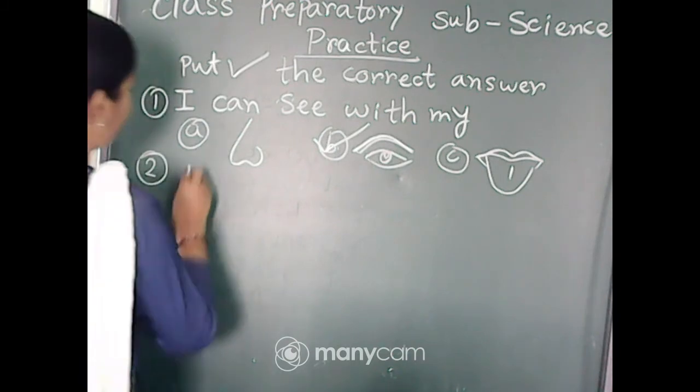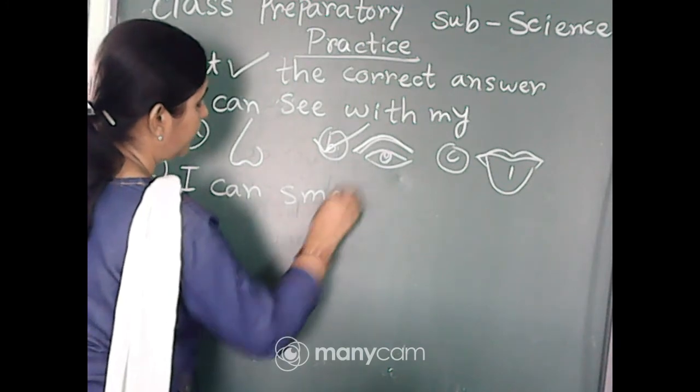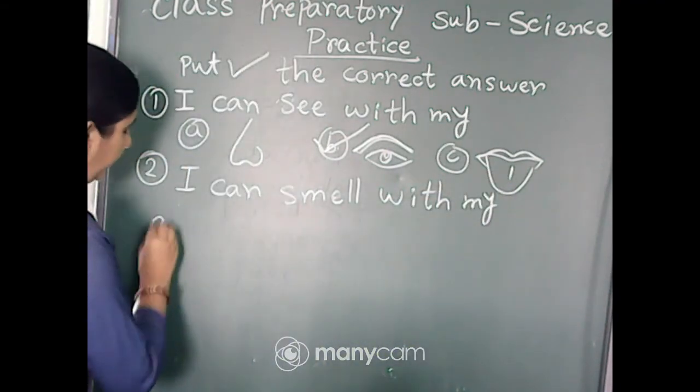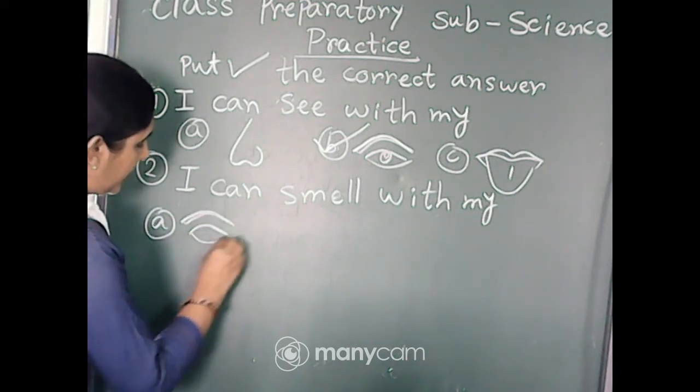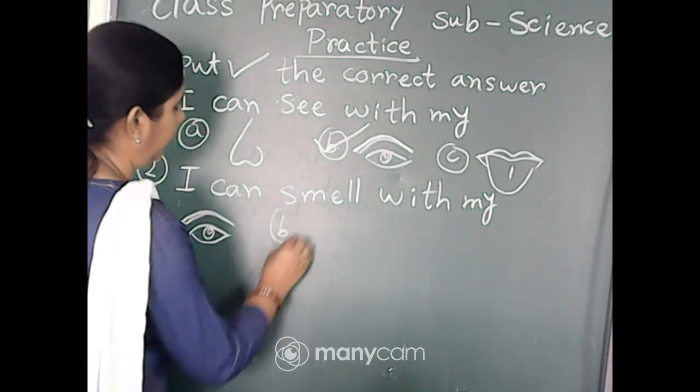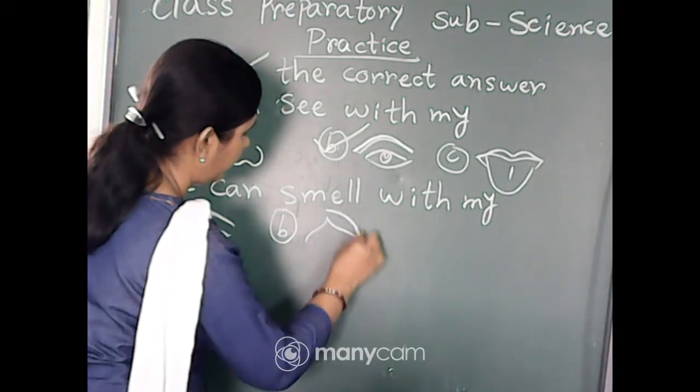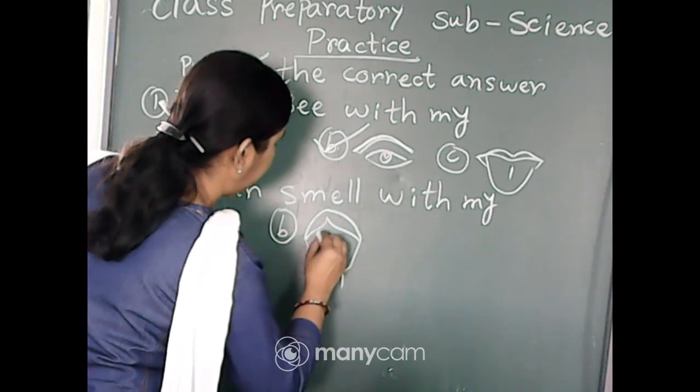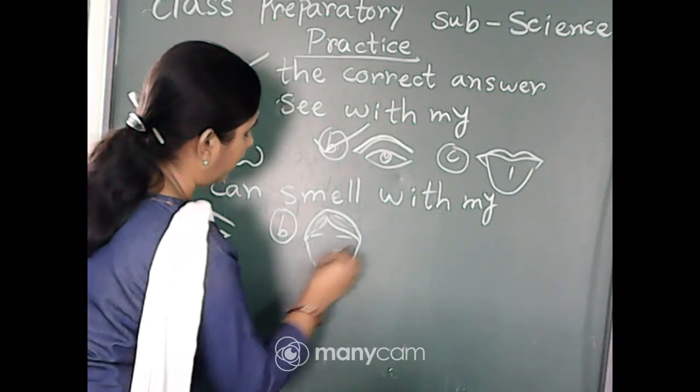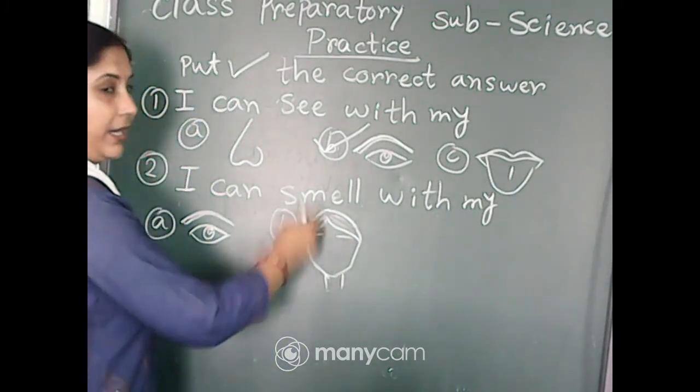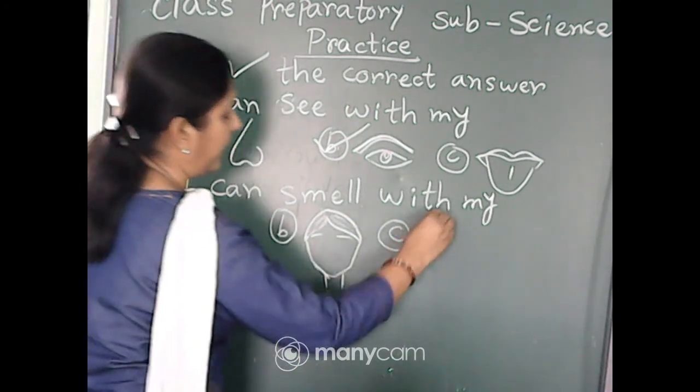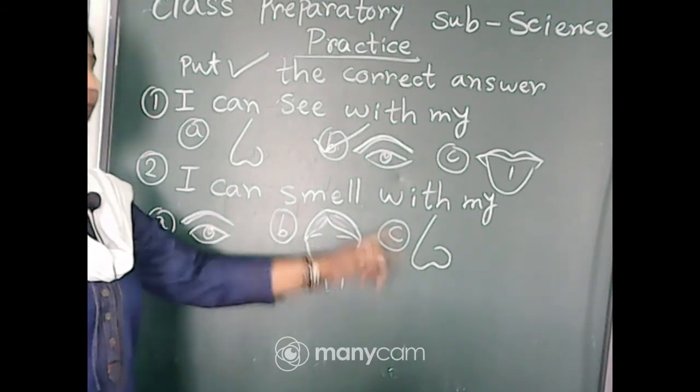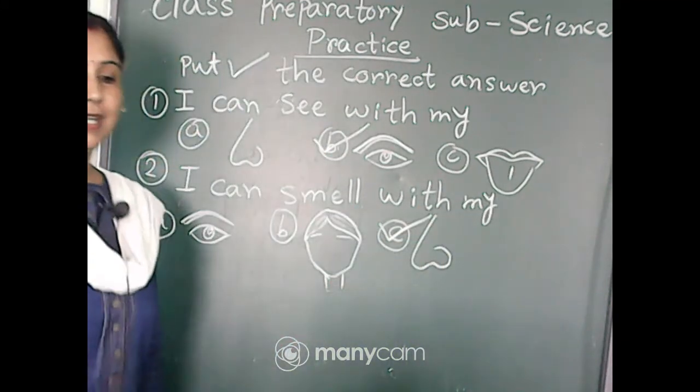Now we move to number two: I can smell with my... Option A is hair, black hair or white hair, whatever we have. I can smell with my hair. And option C, I can smell with my nose. So which one is correct? I can smell with my nose. So number C is the correct option.